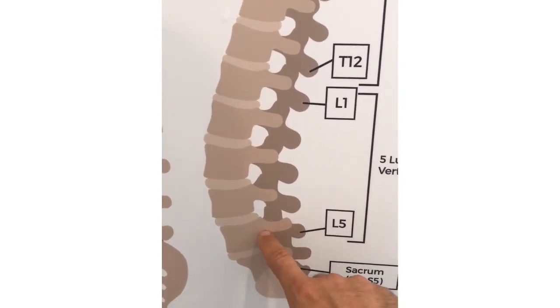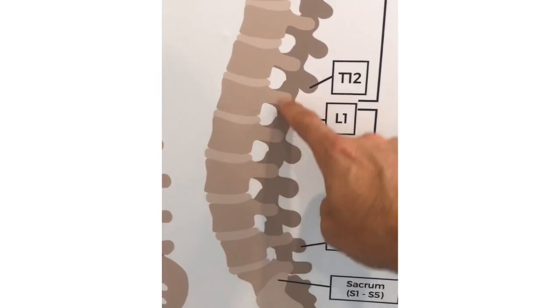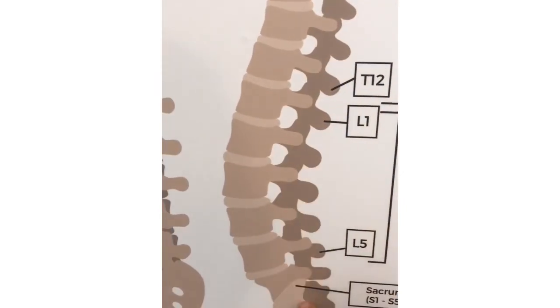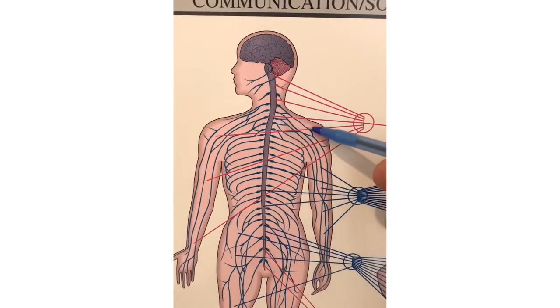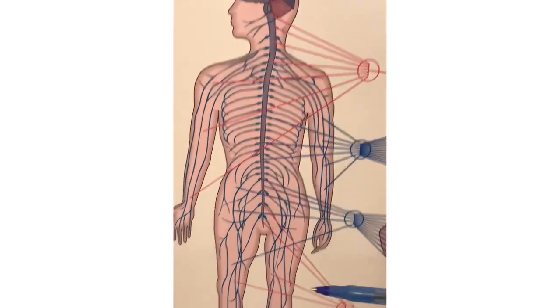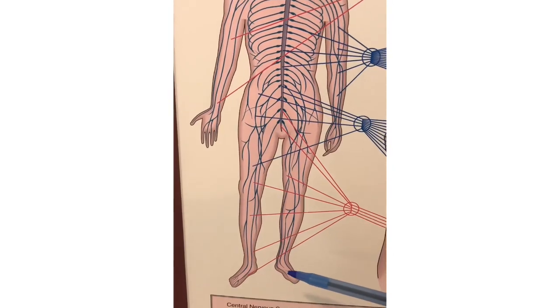If the bones slip forward or backward out of alignment, it can affect the nerve flow going through the spinal cord and out the nerve roots. This nerve flow can then travel down to the tips of your fingers or from the lower part of your spine to the tips of your toes.